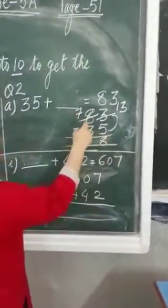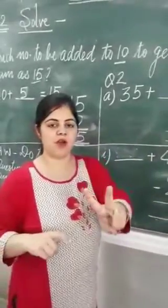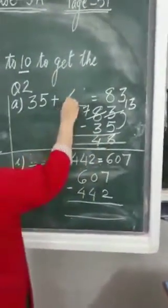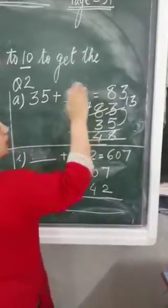7 minus 3. We will start counting after 3. 4, 5, 6, 7. So, we got 48. So, answer is 48 is to be added to 35 to get 83.